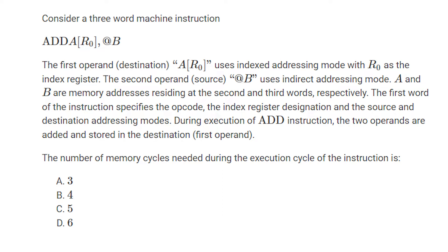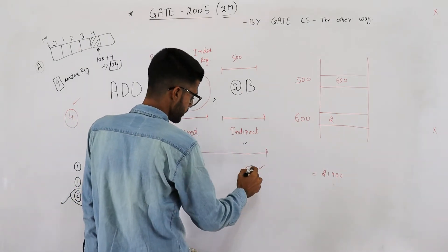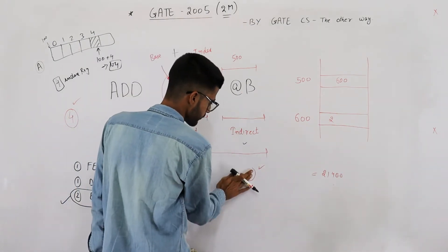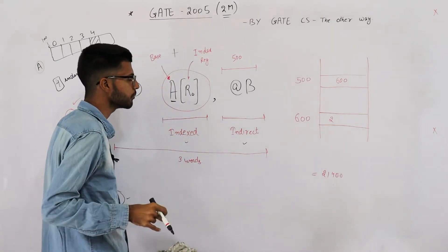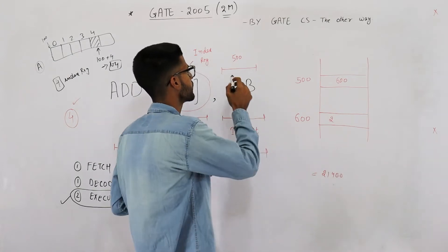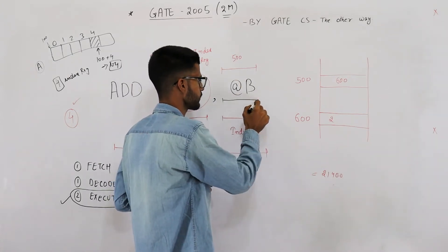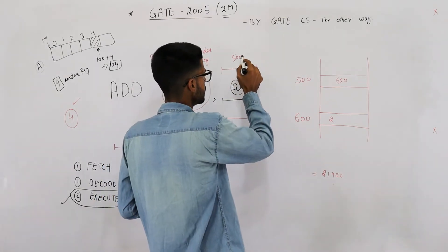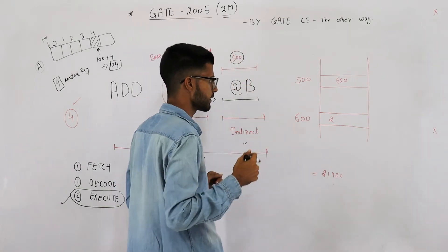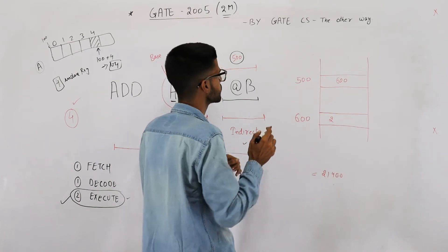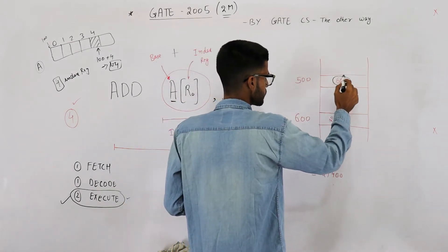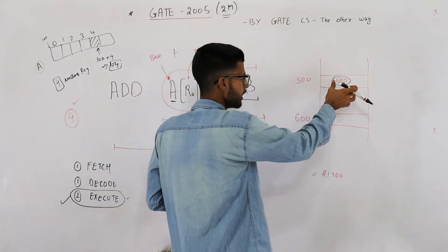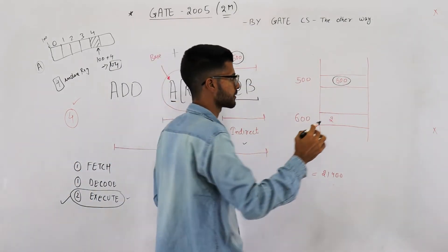The number of memory cycles needed during the execution cycle of this instruction. So first of all, this indirect is going to take two memory accesses. Why? Because indirect says whatever we have saved here in the third part of the instruction is the address of effective address. That means at this address you are going to find the effective address. So first memory access is going to fetch you this, means go to this address in memory and get the effective address.